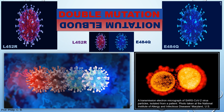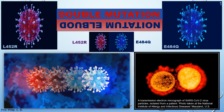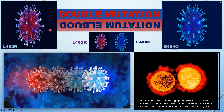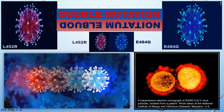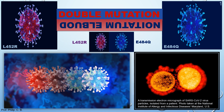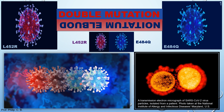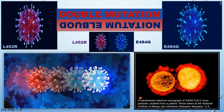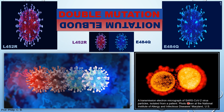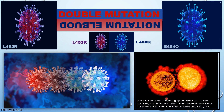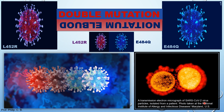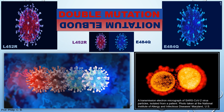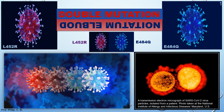Today we are going to learn about double mutation. Here you can see two different strains or variants of mutants — one slightly dark pinkish in color and the other blue. When these two variants merge together, they form the double mutant. Here is a real transmission electron micrograph of SARS-CoV-2 virus particles isolated from an infected patient, taken at the National Institute of Allergy and Infectious Disease, Maryland, US.